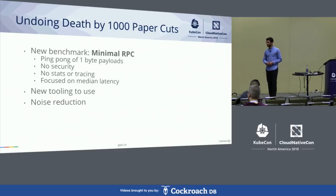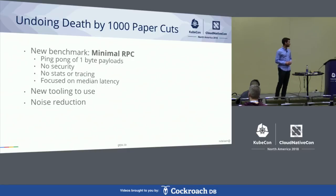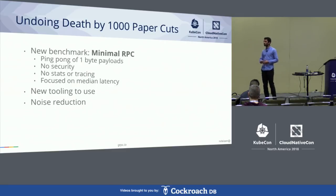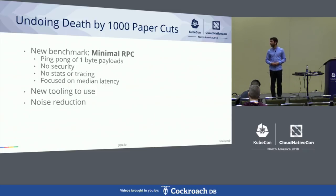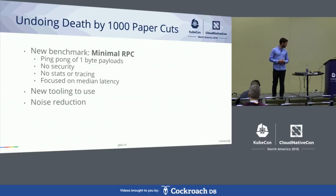We focused on a new benchmark called the minimal RPC — a specific scenario of our synthetic system. We configured it to ping-pong back and forth with one-byte payloads, no security, and no stats for tracing, then focused on median latency between two computers running in the same rack. We knew this number was about 70 microseconds, everyone on the team knew this number, and we could start iterating on it. We also reached out and found new tools, and had to do an effort to reduce noise — a noisy scenario was running a two-minute benchmark 30 times and taking the median.